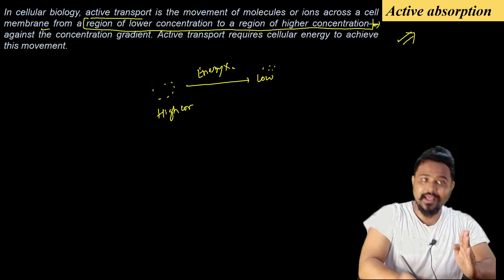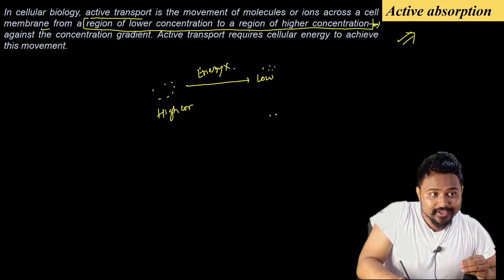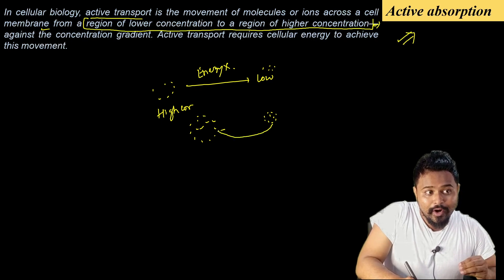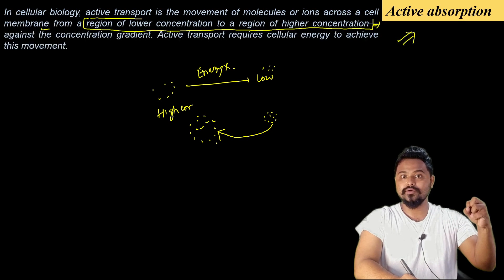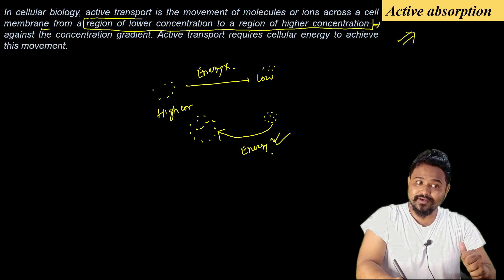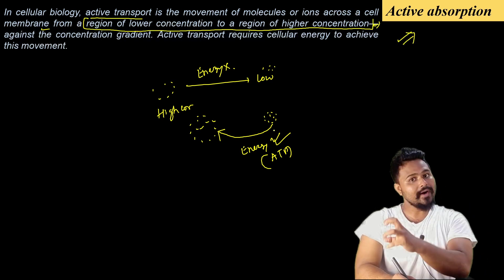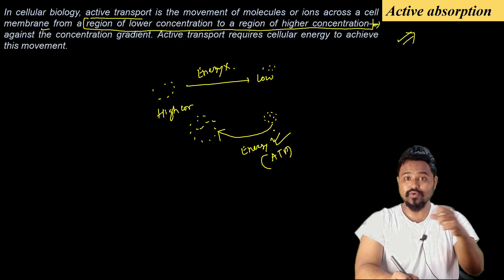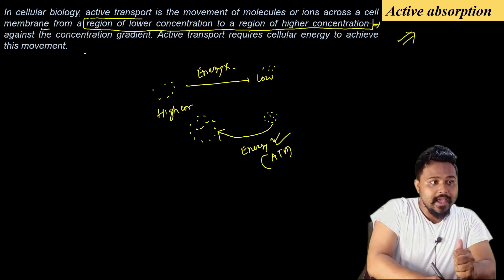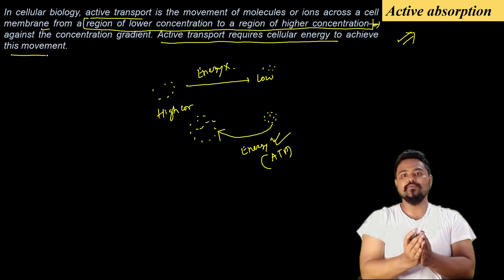Transport happens without tension or energy in passive absorption. But when we move substances from lower concentration to higher concentration, energy is required. Lower concentration already has less substance, higher concentration already has more, so to transport against this gradient requires energy to use ATP. Active transport requires cellular energy to achieve this movement.